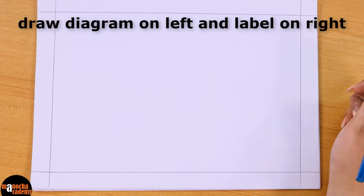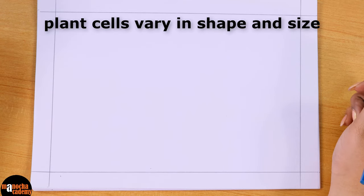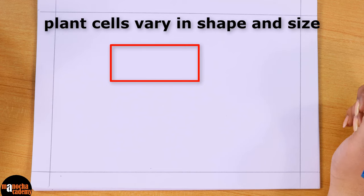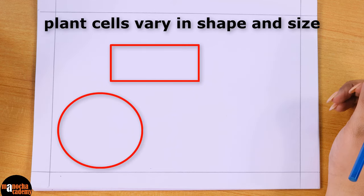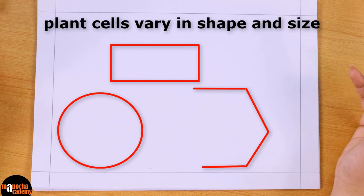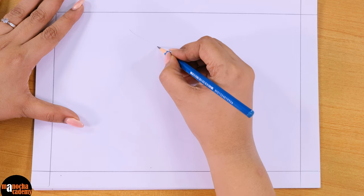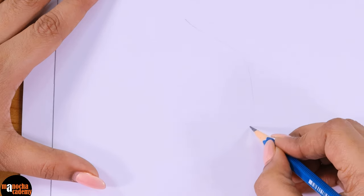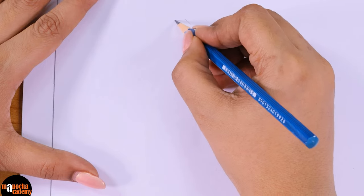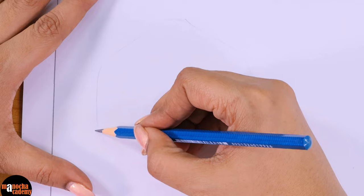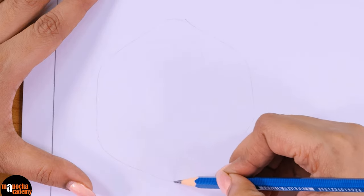Now the shape of a plant cell can vary. You can draw a rectangular cell, you can draw a circular or spherical cell, you can draw a cell which is polygonal. So here I am drawing a cell which is polygonal, so I will first draw out the outline.